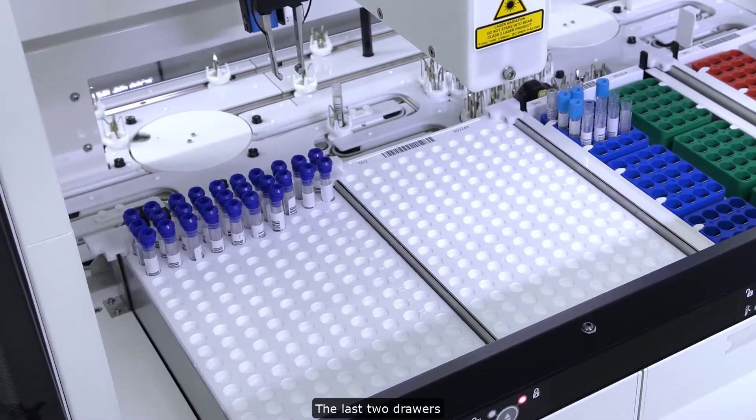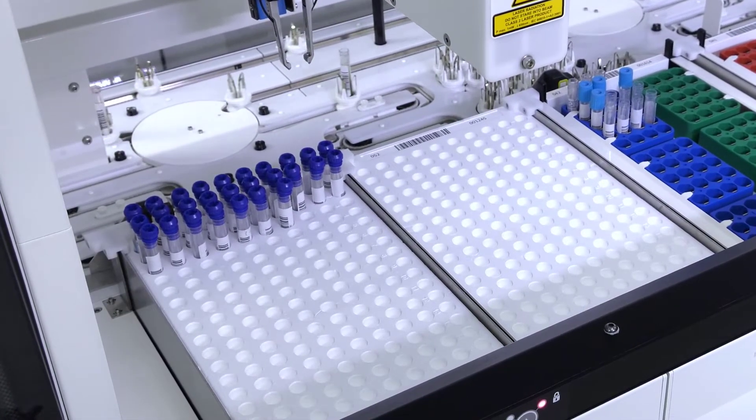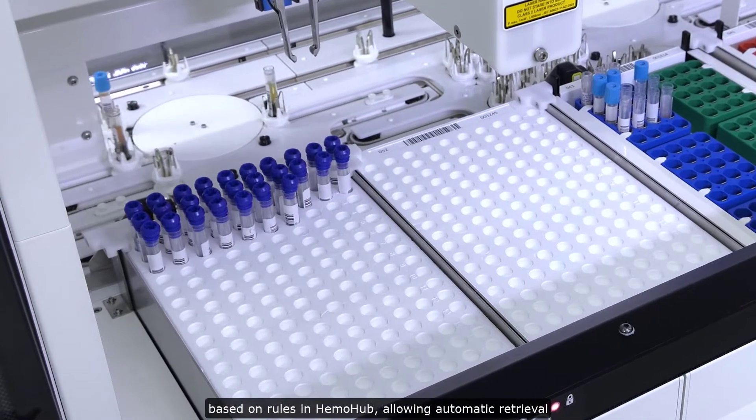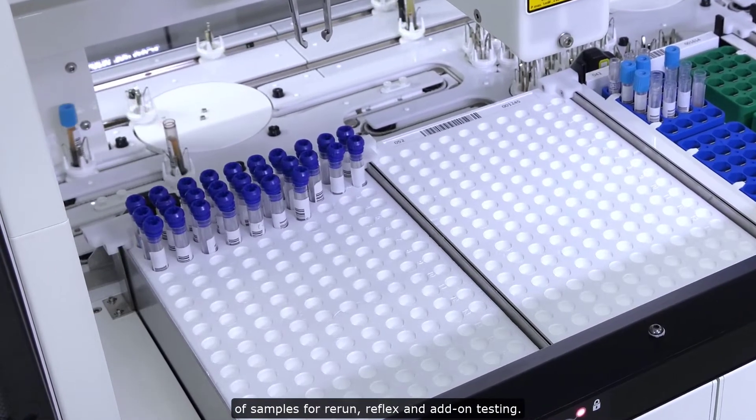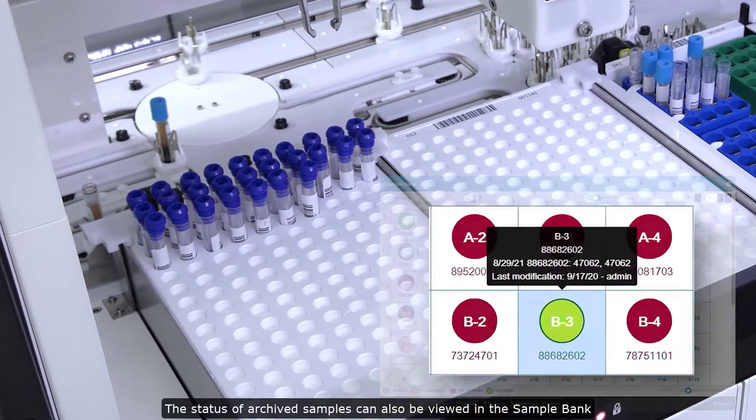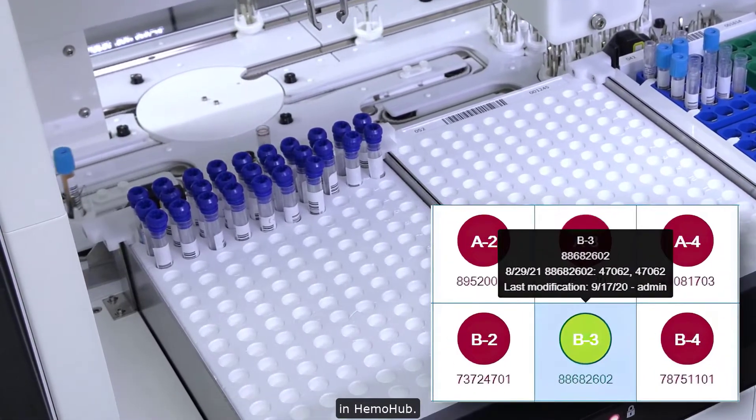The last two drawers are typically designated as archival areas, based on rules in HemoHub, allowing automatic retrieval of samples for rerun, reflex, and add-on testing. The status of archived samples can also be viewed in the sample bank in HemoHub.